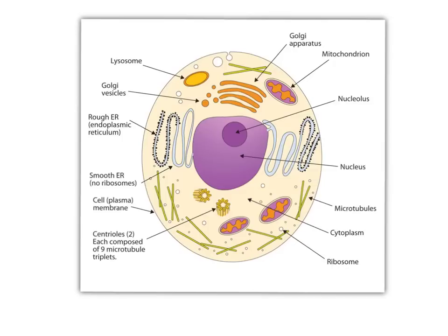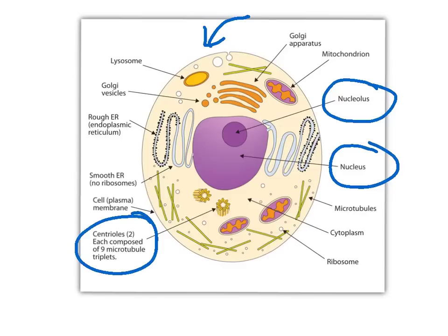So here's a really quick vocabulary review. This is the example of a human cell. Today we're going to be focusing on our nucleus, a little bit on our nucleolus, and then definitely using our centrioles. Remember, centrioles are important for cell division, which is actually what we're going to be learning about today.